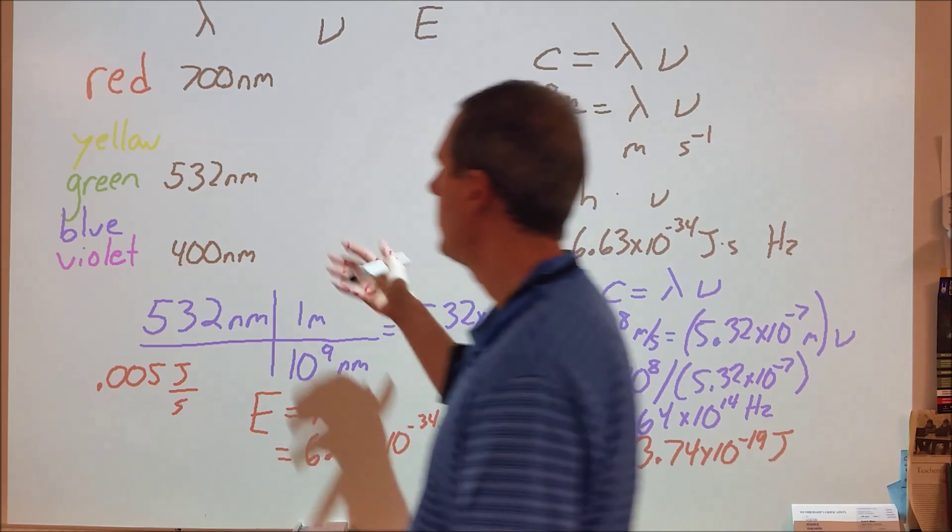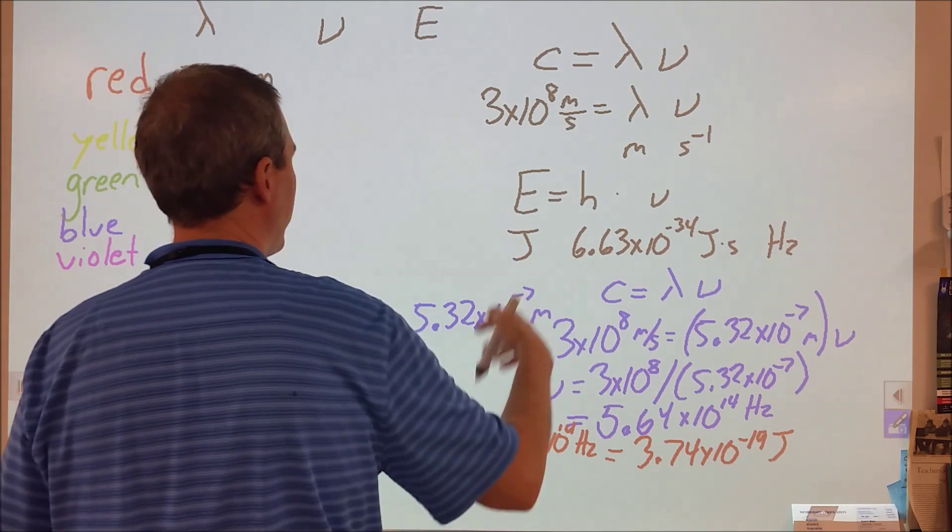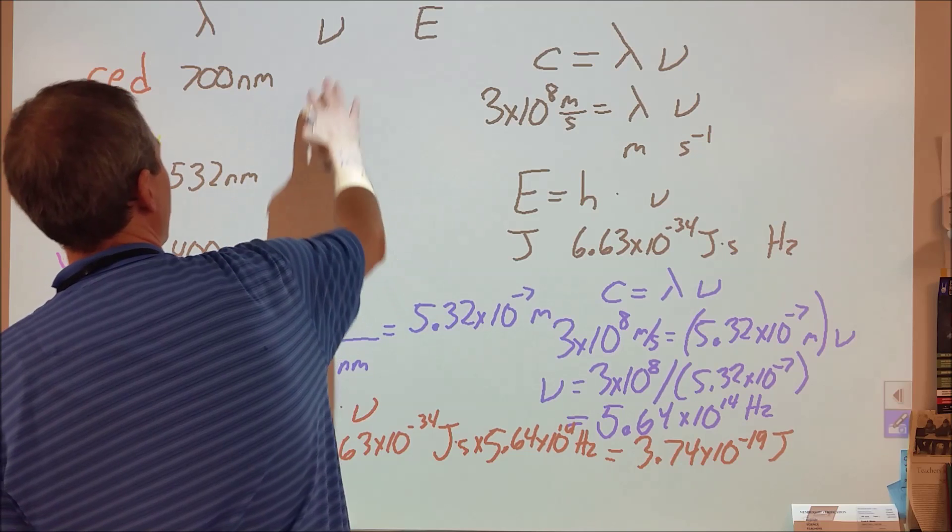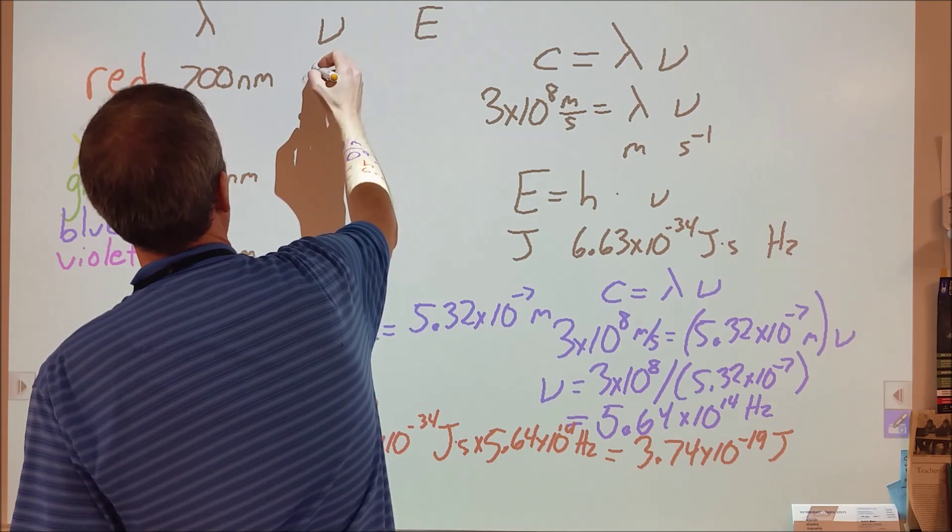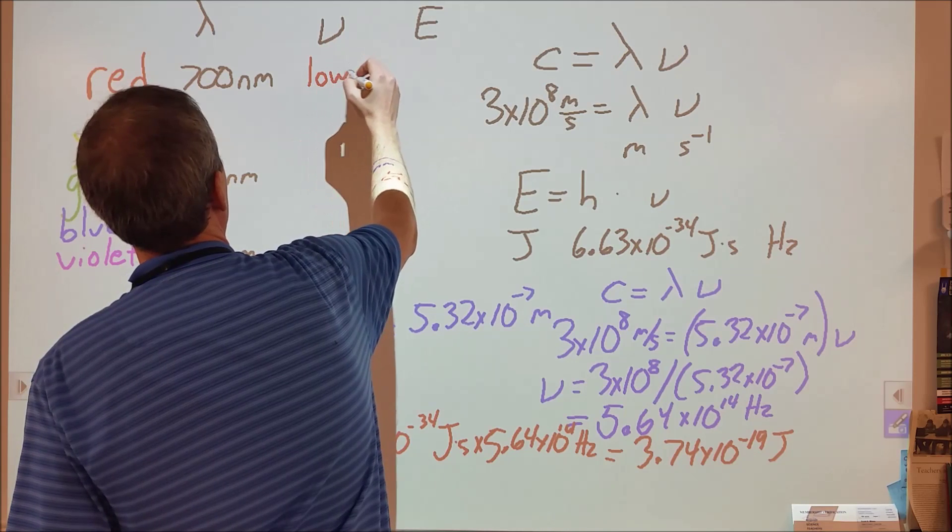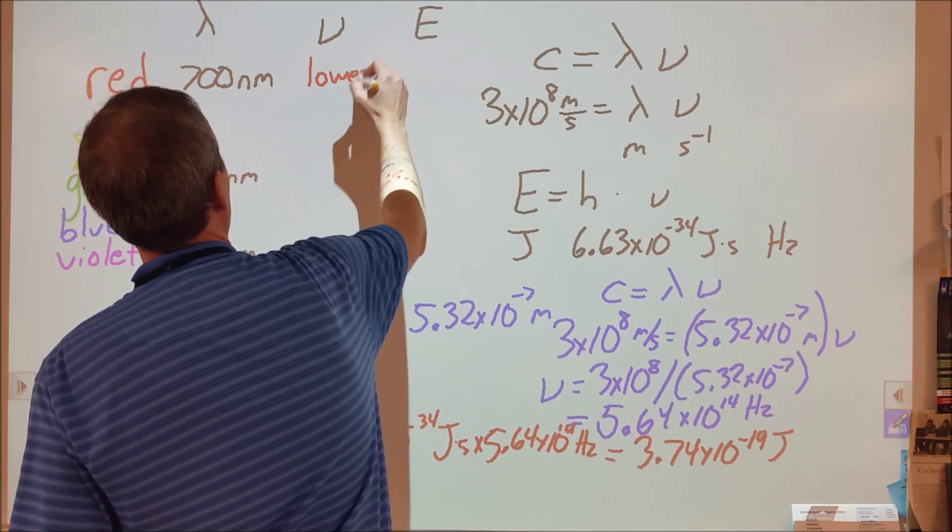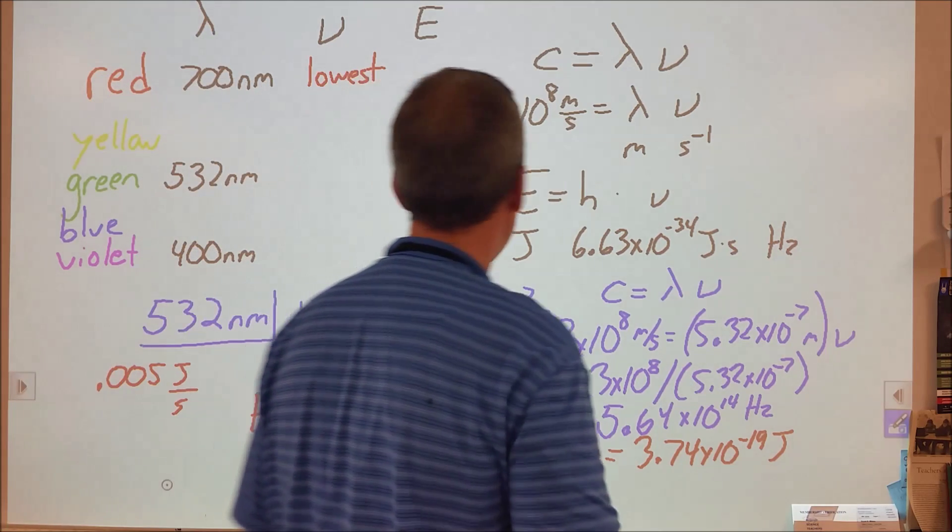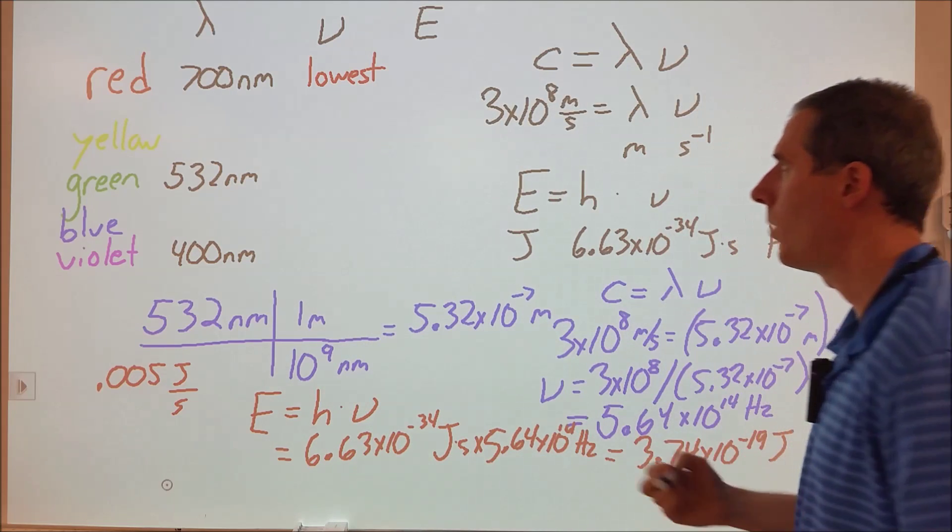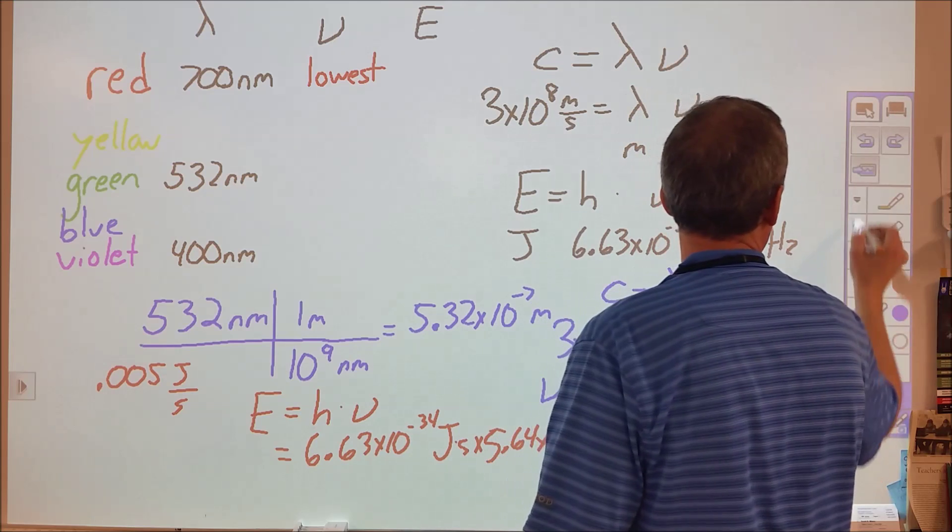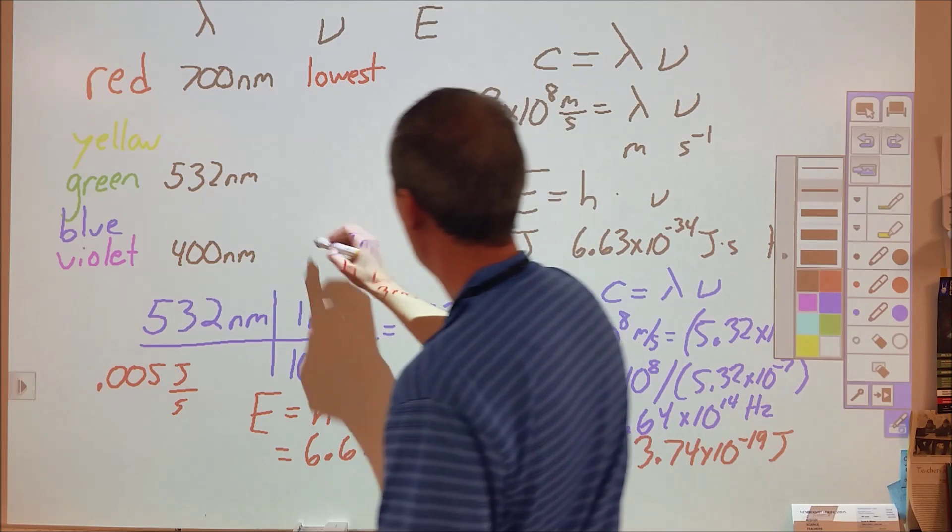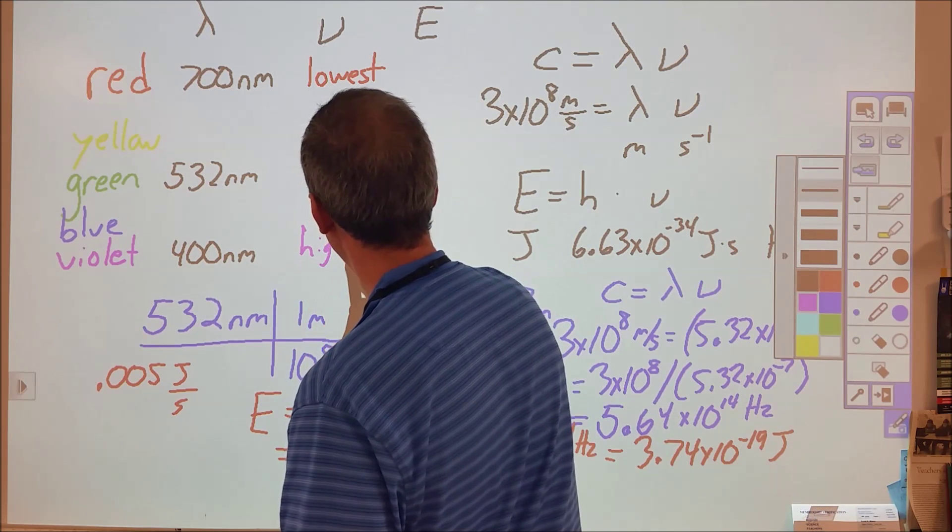What we want to do last is we want to be able to not just do calculations with this, but we want to have an understanding of the comparisons of frequencies and energies. The longer the wavelength is, the lower the frequency will be. Of all the colors of light in visible light, red would have the lowest frequency and then violet would have the highest frequency. They would gradually get larger from going from one end to the other.